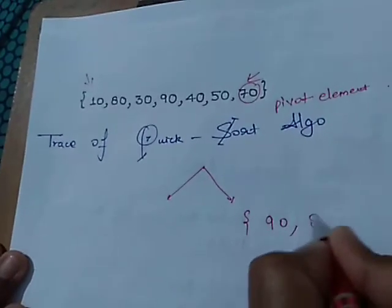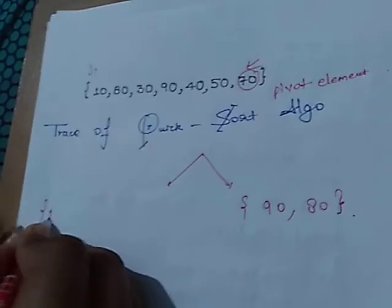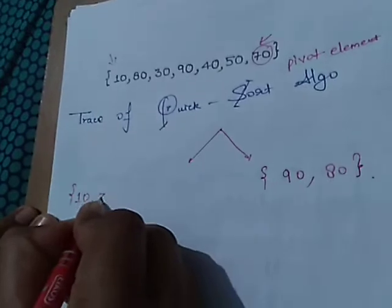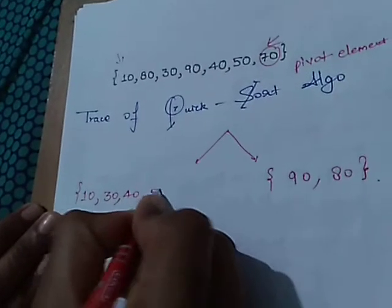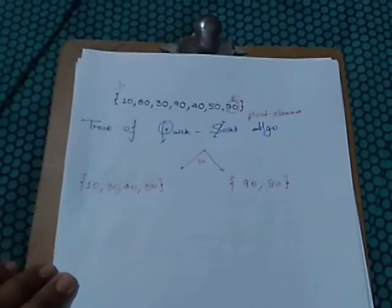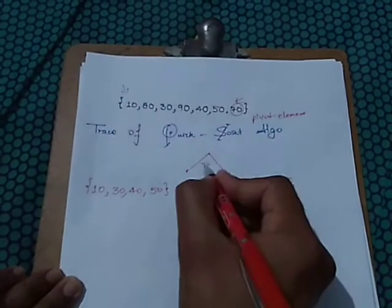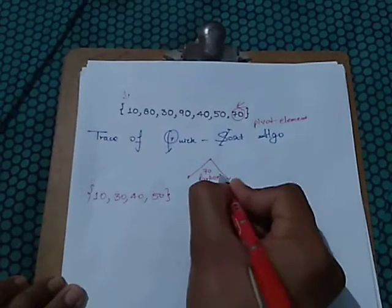So here we will get 90, 80 on the right, and on the left-hand side we will get 10, 30, 40, 50. Now these elements are partitioning around 70.